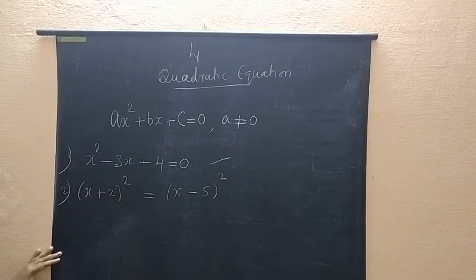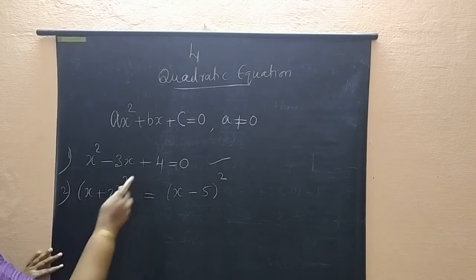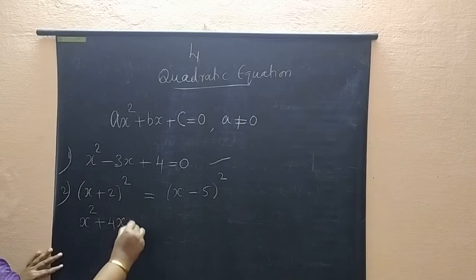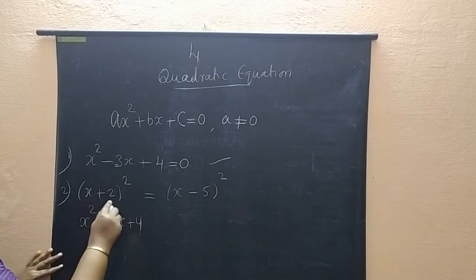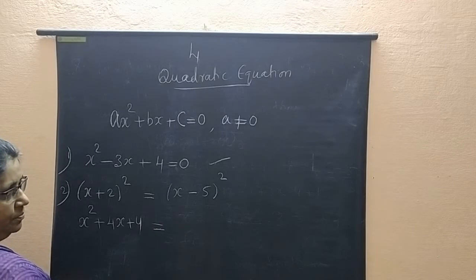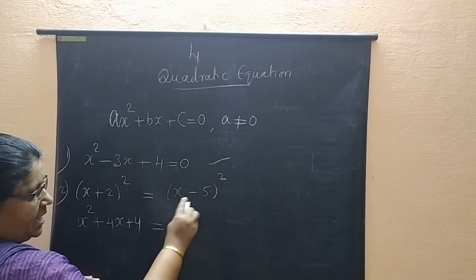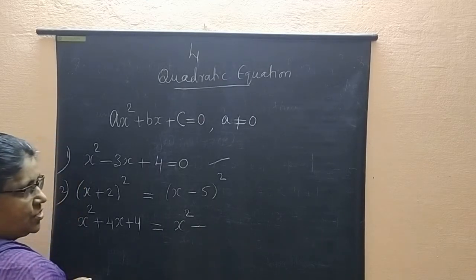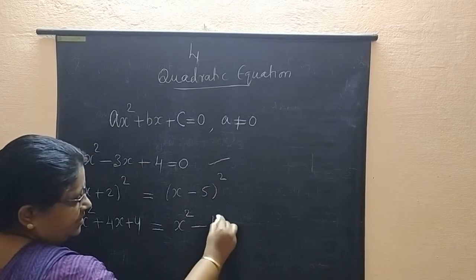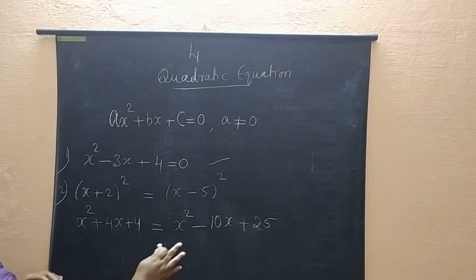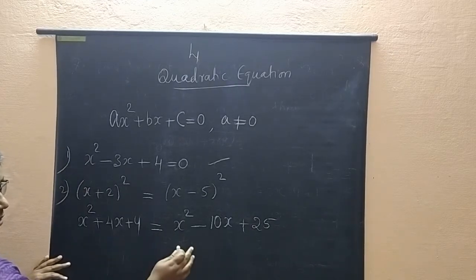(x + 2)² expands using the (a + b)² formula to give x² + 4x + 4. On the right side, (x - 5)² uses the (a - b)² formula to give x² - 10x + 25. On both sides of the equals sign, x² is common and can be cancelled.